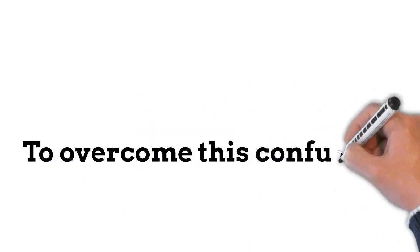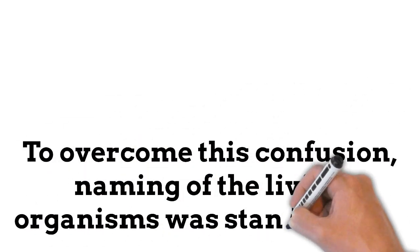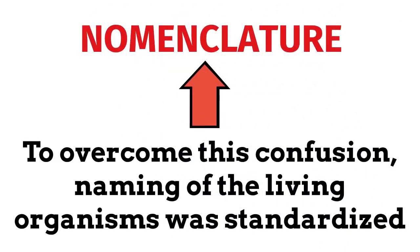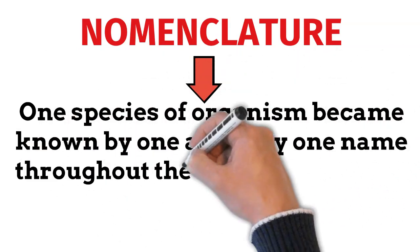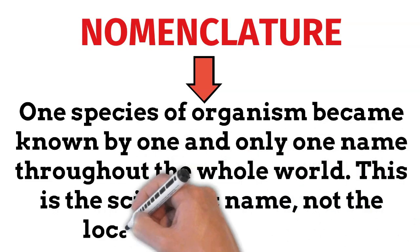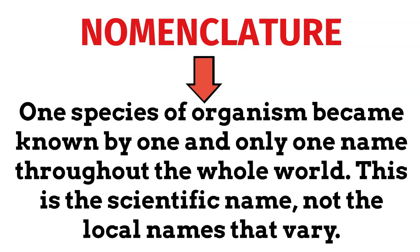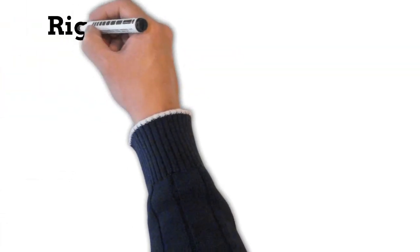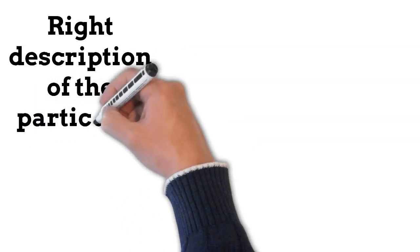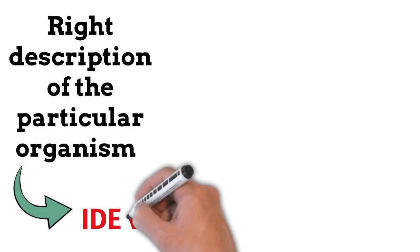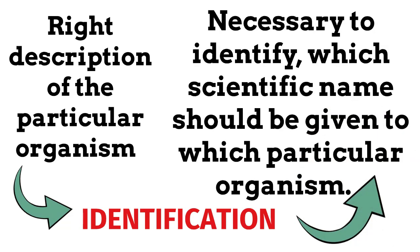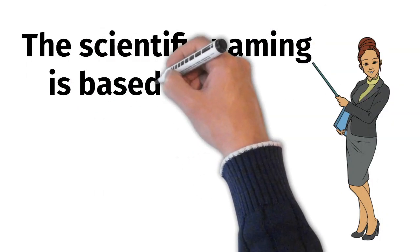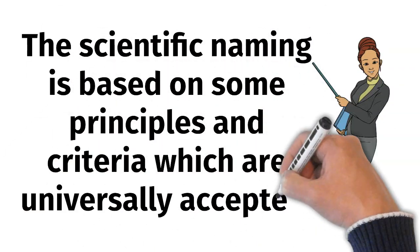To overcome this confusion, naming of living organisms was standardized, which is called nomenclature. By this, one species of organism became known by one and only one name throughout the whole world — this is the scientific name, not the local names that vary. For nomenclature, first the right description of the particular organism is necessary, which is called identification. It is necessary to identify which scientific name should be given to which particular organism.